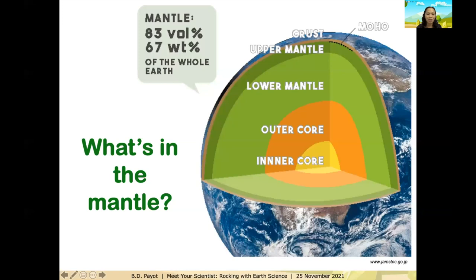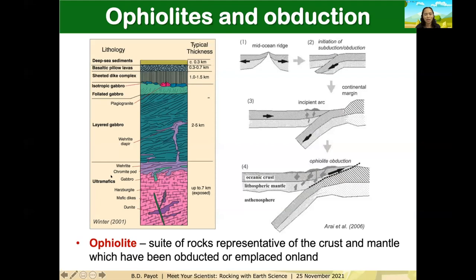For my work, I'm interested in what rocks are present in the deeper portions of the earth. To address the issue of inaccessibility, there are rocks exposed on the earth's surface thought to be representative of deeper portions — we call these sequences ophiolites. This cartoon shows the different lithologies comprising an ophiolite: a sequence of rocks representative of the crust and mantle that has been obducted or exposed on land.